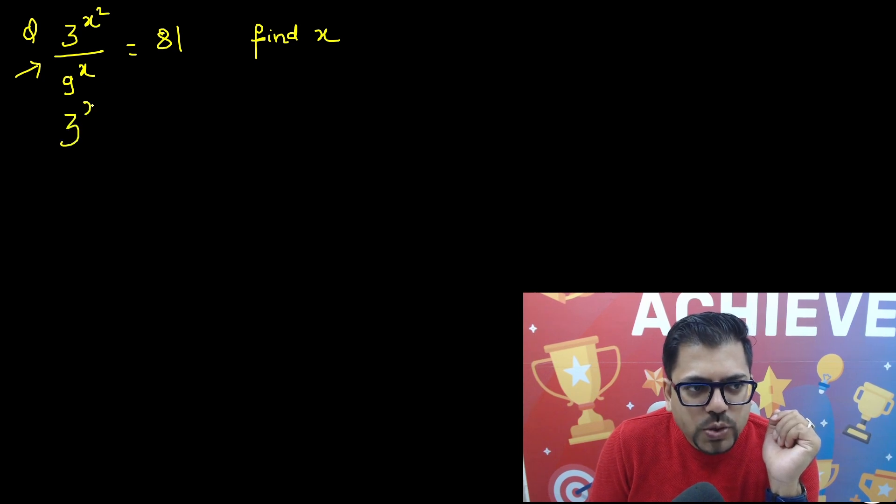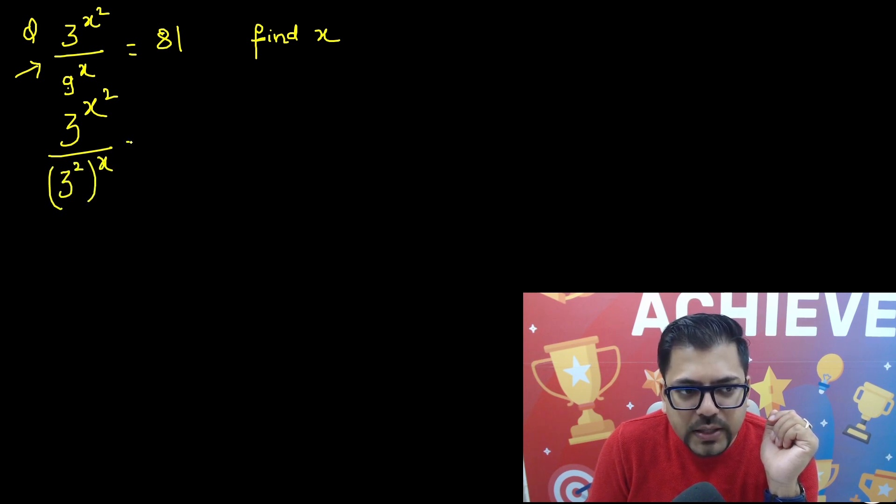So I can write 3 raised to power x squared, it is as it is. Denominator, you have a 9, so you can write 3 raised to power 2 and whole raised to power x equals to this is 81. So that's 3 raised to power 4.